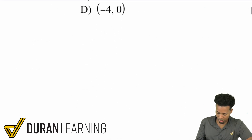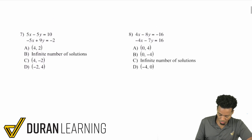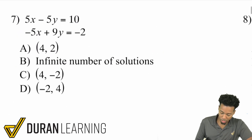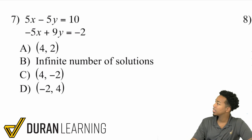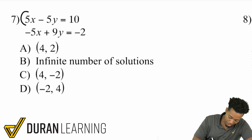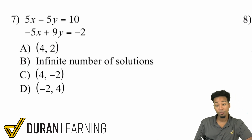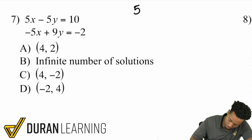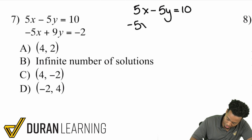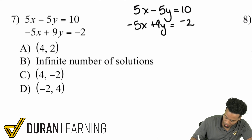Let me go to the next example — number 7. I can see that we can eliminate the x variable because you have a positive 5x and a negative 5x. So if I add those two equations together, the x would be eliminated, giving me just an equation with y that I can solve. We have 5x minus 5y equals 10, and negative 5x plus 9y equals negative 2. Let's add these two together.